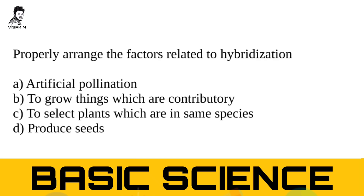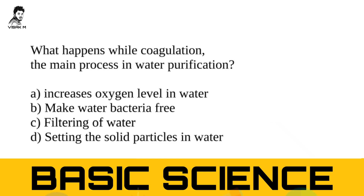Second question: properly arrange the factors related to hybridization. You know what hybridization is — it has been discussed in earlier classes. Option A: artificial pollination. Option B: to grow things which are contributory. Option C: to select plants which are in the same species. Option D: produce seeds. The correct answer is option C — to select plants which are in the same species.